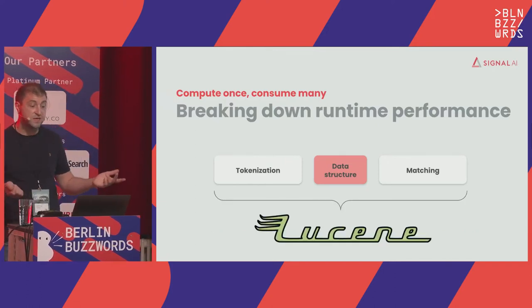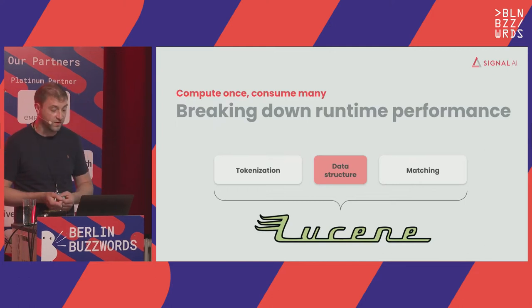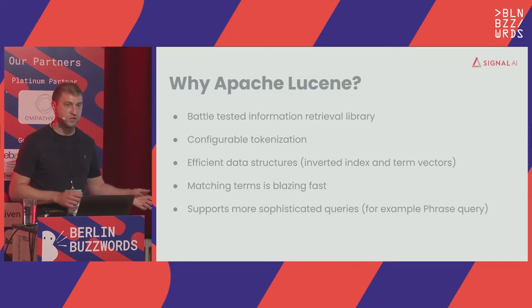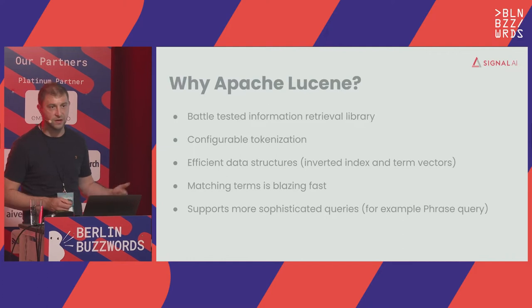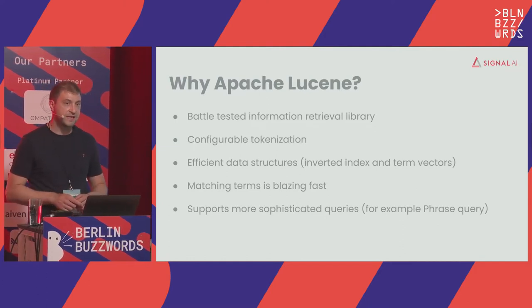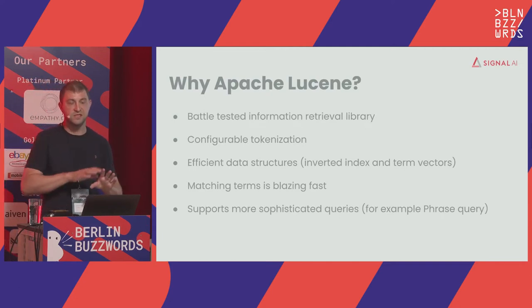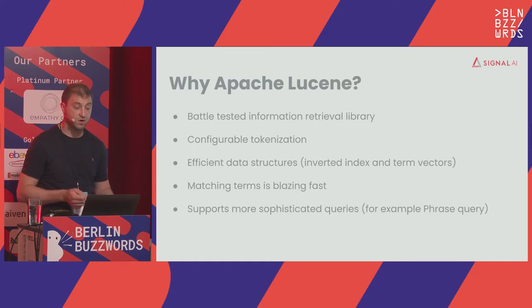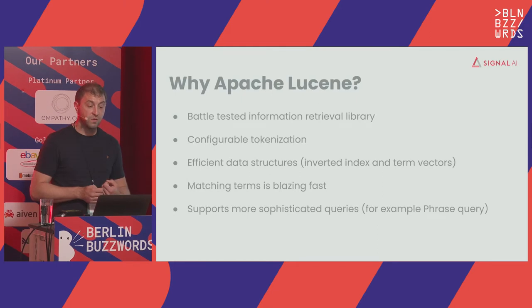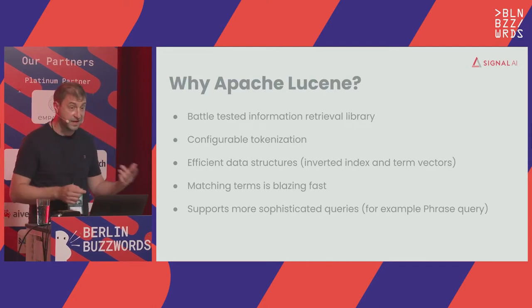Let me introduce Apache Lucene. Apache Lucene does excellent tokenization, provides great data structures, and has a great way of matching and running queries. Lucene is a battle-tested information retrieval library. It has a great and configurable framework for tokenization — you can create different steps to tokenize your text. It uses efficient data structures like inverted indexes and term vectors, making term matching blazing fast. And thanks to the advanced querying, we can do much more sophisticated queries, such as a phrase query that solves the problem of aliases with multiple tokens.